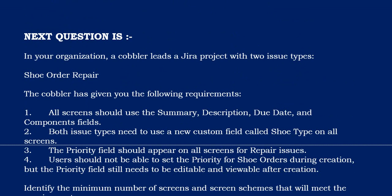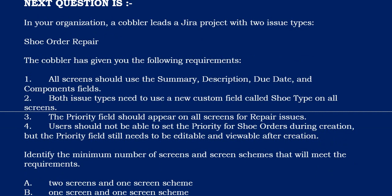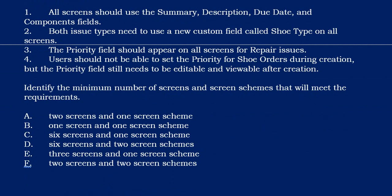Next. In your organization, the cobbler leads a Jira project with two issue types: shoe order and repair. The cobbler has given you the following requirements. First, all screens should use the summary, description, due date, and component fields. Second, both issue types need to use a new custom field called shoe type on all screens. Third, the priority field should appear on all screens for repair issues. Fourth, users should not be able to set the priority for shoe order during creation, but the priority field still needs to be editable and viewable after creation. Identify the minimum number of screens and screen schemes that will meet the requirement.